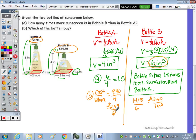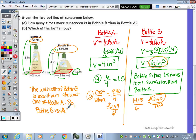So the unit cost for bottle B is $2.40 per 1 cubic inch, and that's less than bottle A. So to answer question B, the unit cost of bottle B is less than, and you can state that it's $0.09 less than, is less than the unit cost of bottle A. Therefore, bottle B is the better buy. Thank you.